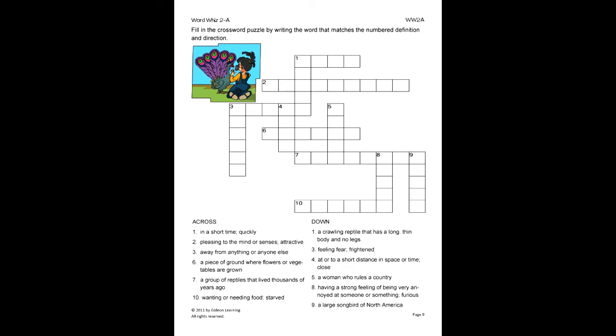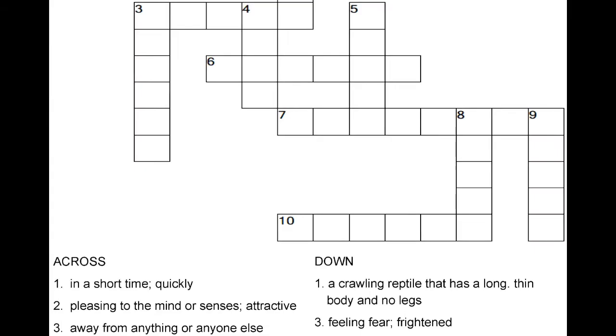On this activity, the student will fill in the crossword puzzle by writing the word that matches the number definition and direction. Let's do number 3 for example. First, read the definition: away from anything or anyone else. Since we know this is the definition for alone, we will write the word in the boxes for number 3 across.